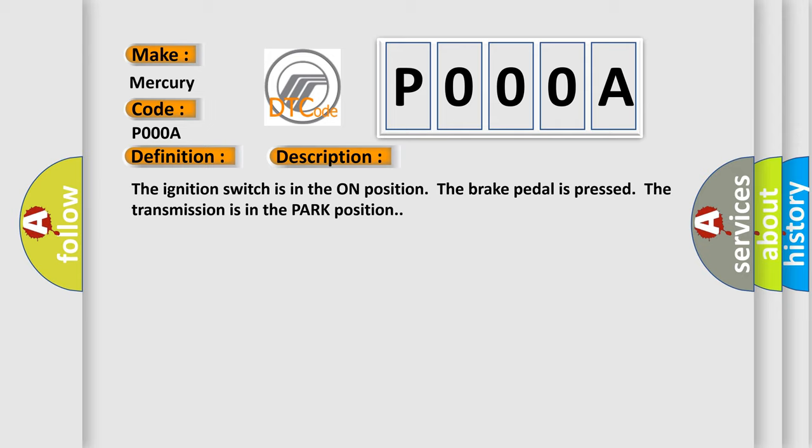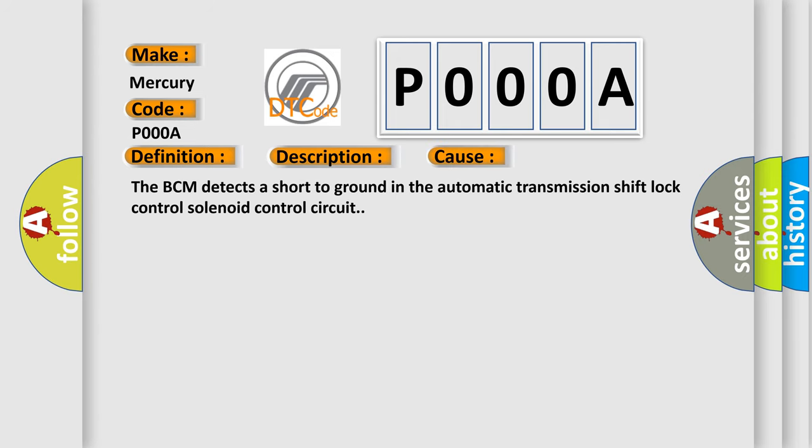This diagnostic error occurs most often in these cases: the BCM detects a short to ground in the automatic transmission shift lock control solenoid control circuit.